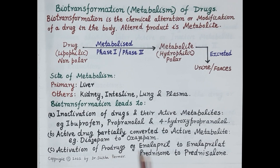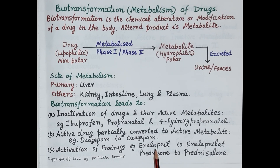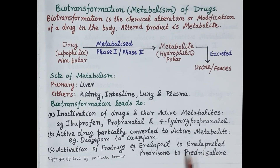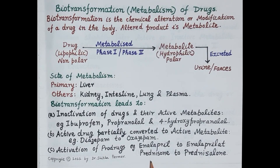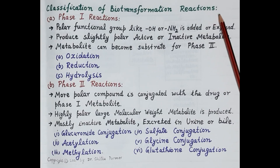Thirdly, biotransformation causes activation of inactive drugs. Inactive drugs are called prodrugs. For example, enalapril — enalapril is an antihypertensive drug that is inactive and is termed a prodrug. In the body, enalapril is activated by biotransformation to enalaprilate, and enalaprilate reduces blood pressure. Another example is prednisone — prednisone is also a prodrug which is biotransformed to its active form, prednisolone.